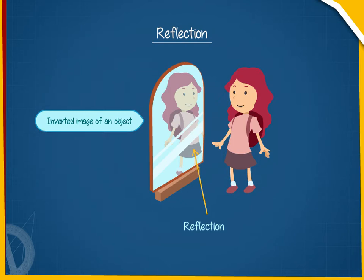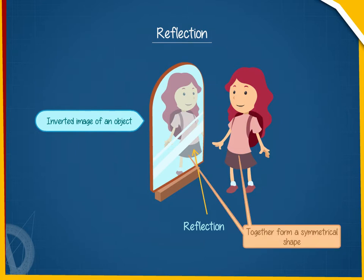The object and its image together form a symmetrical shape, and the mirror line is the line or axis of symmetry. The reflected image does not have any change in the shape or size.